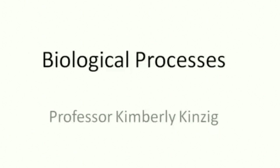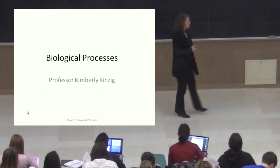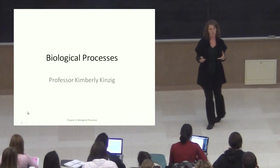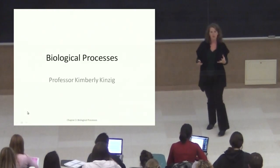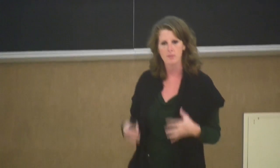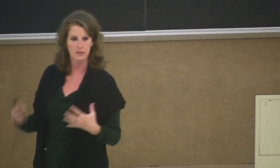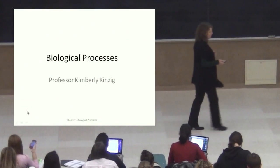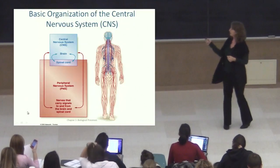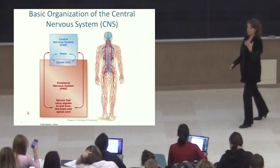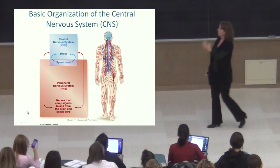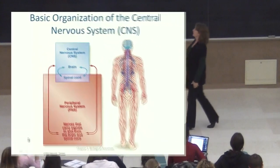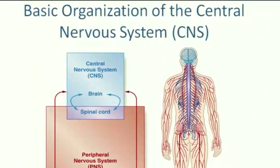Today we're going to continue talking about biological processes. What we're going to do is talk more about the organization of the central nervous system and how different areas of your brain control different types of behaviors. We'll start with a brief overview of the basic organization of your central nervous system.